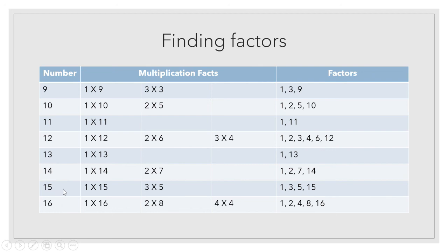Fifteen — one fifteens are fifteen and fifteen ones are fifteen, so one and fifteen are factors. Also, three fives are fifteen and five threes are fifteen. So the factors of fifteen are one, three, five, and fifteen — four factors.